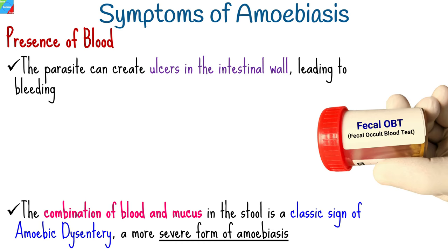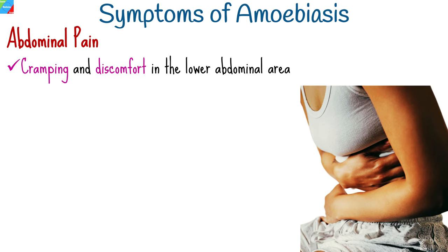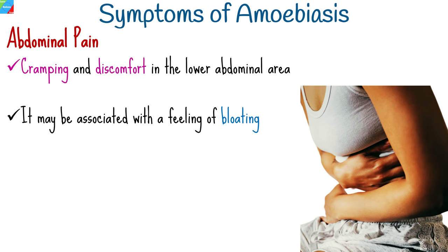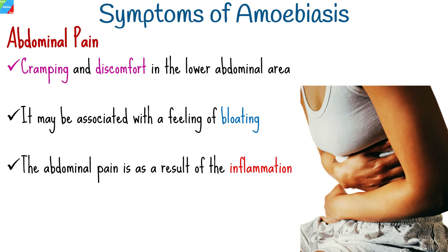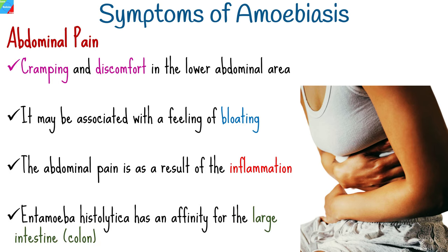Abdominal pain in amoebiasis is typically described as cramping and discomfort in the lower abdominal area. It can vary in intensity and may come and go, occurring in any area of the abdomen, and may be associated with a feeling of fullness or bloating. The abdominal pain is primarily a result of inflammation and irritation caused by the amoebic parasites in the intestinal lining. Entamoeba histolytica has a particular affinity for the large intestine, where it can cause significant inflammation and damage.